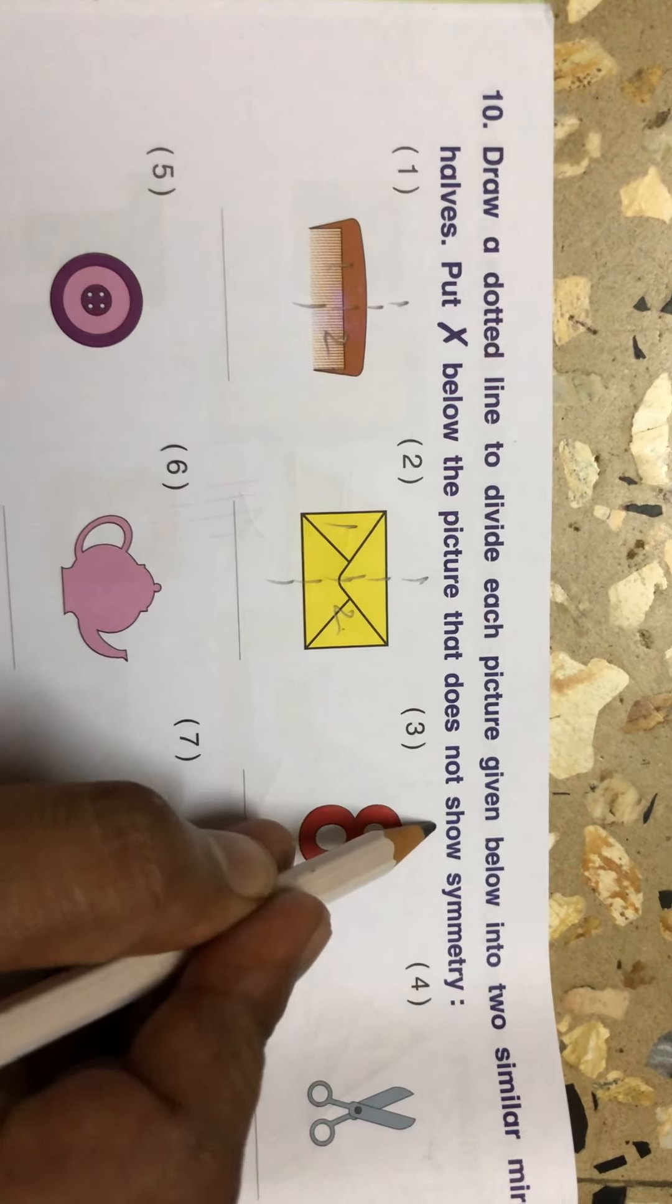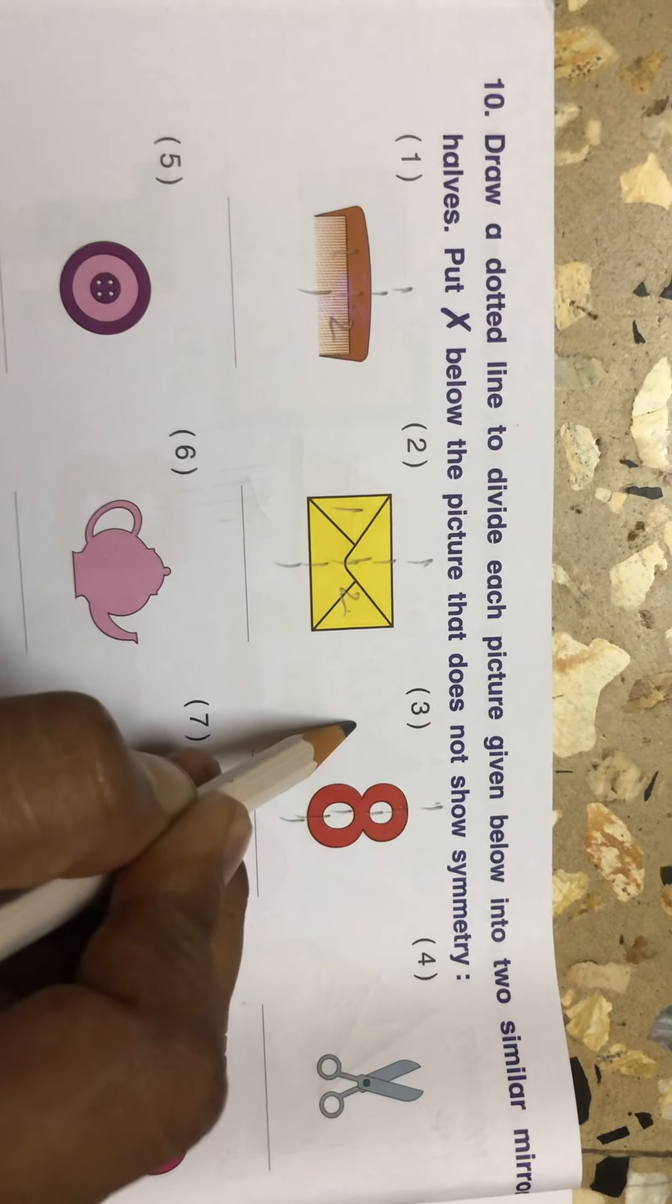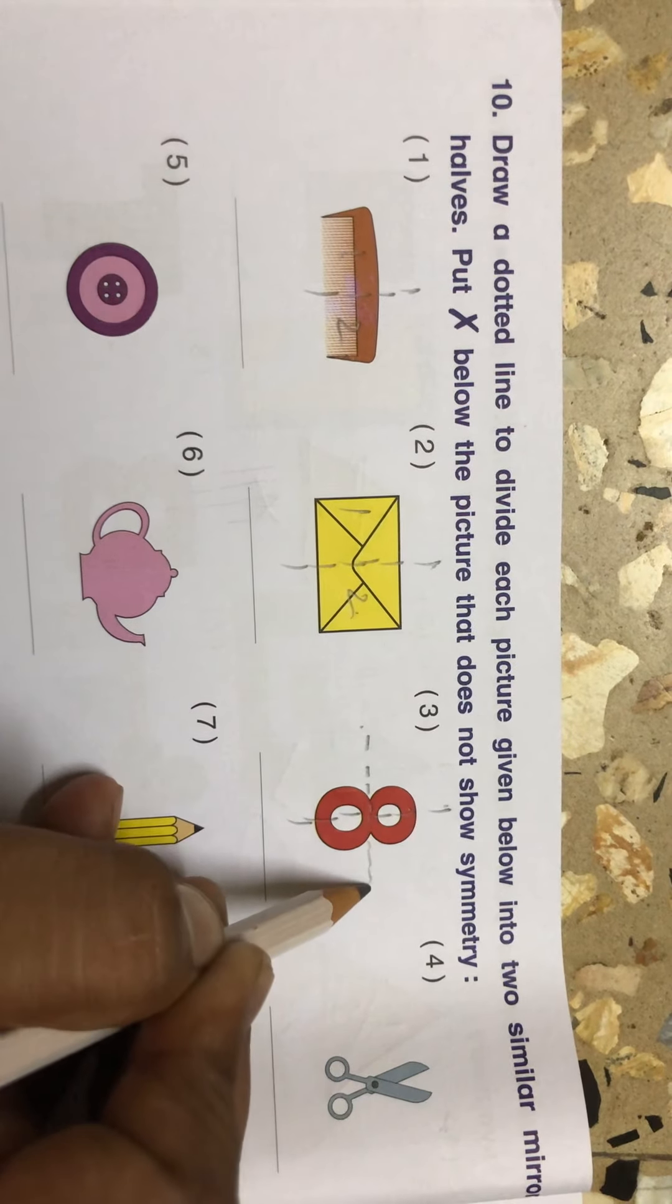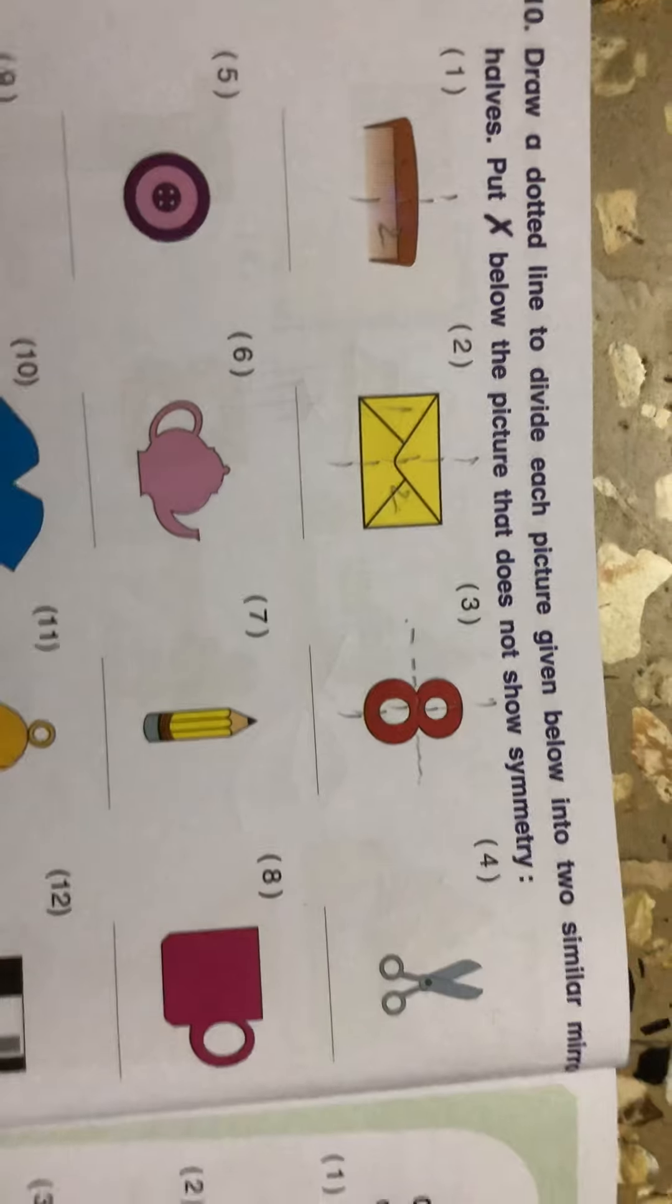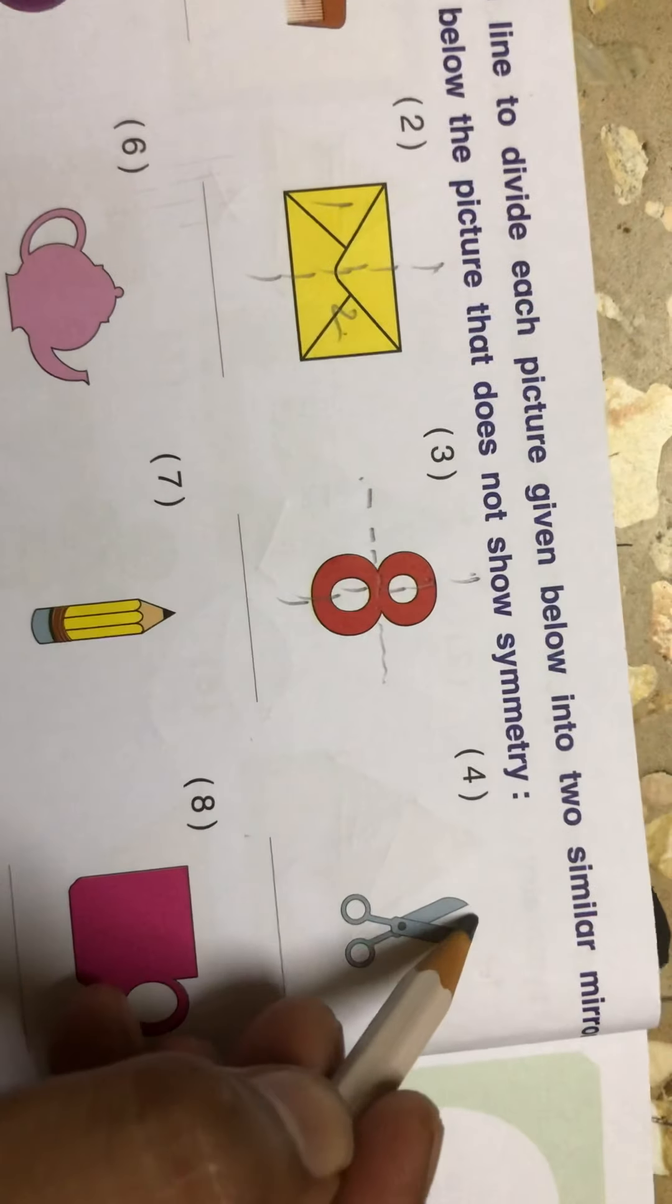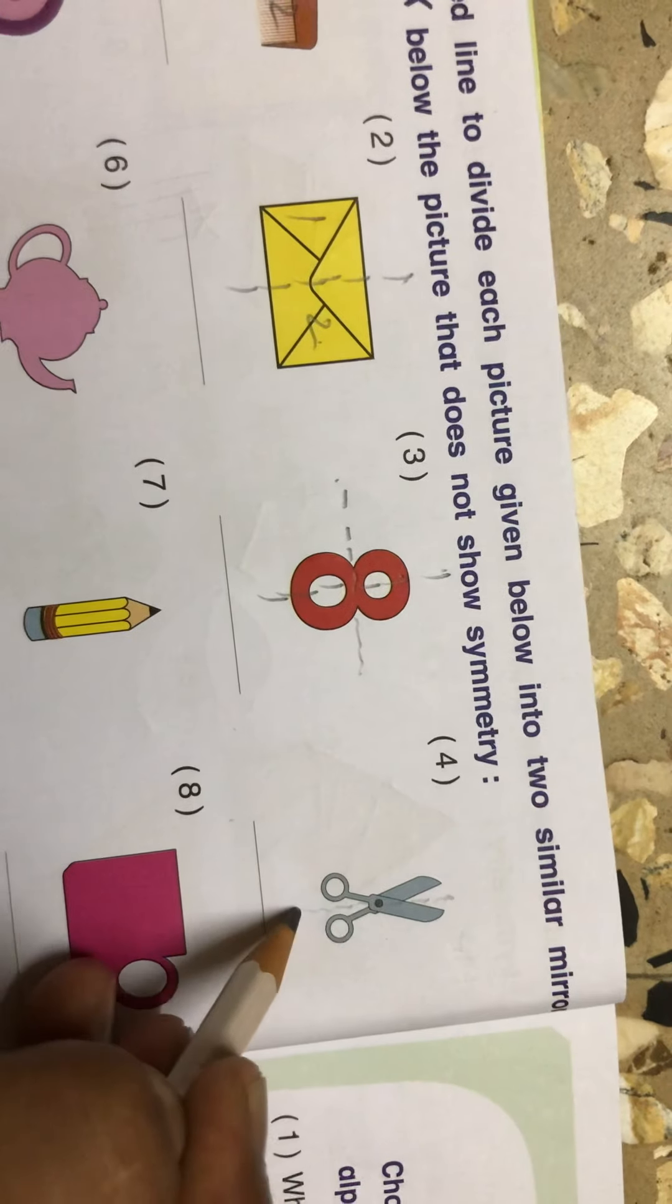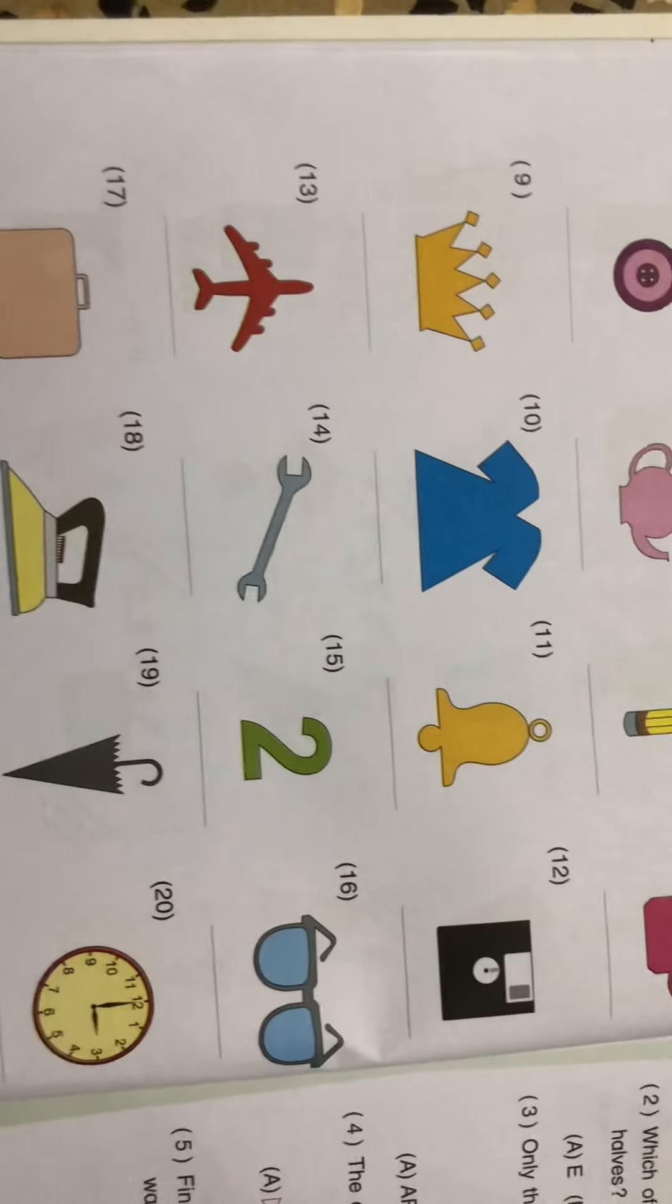Eight. See, you can divide it into two equal parts. And it has two lines of symmetry. An object or shape can have more than one also symmetrical line. See this one, it is also the symmetrical object. See. Rest of all you will do it yourself.